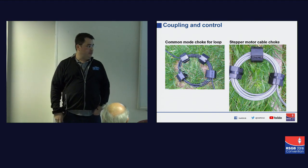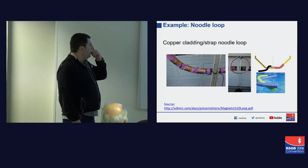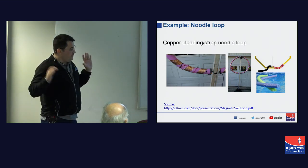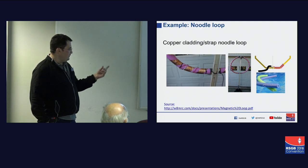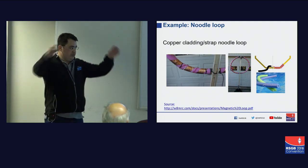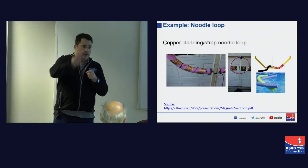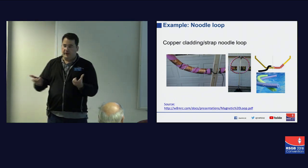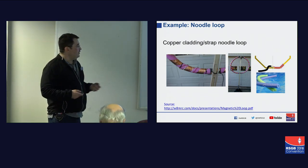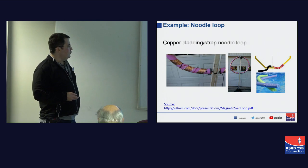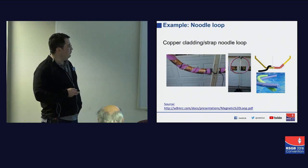In terms of examples beyond what I've done — there are guys out there who've created what they've called noodle loops, using the swimming noodles that kids learn to swim with as a former. They take some copper cladding, wrap it around, and create a loop out of that. It's an inexpensive way of getting a loop together, then using a twisted gamma match or a coupling loop. It's more difficult to use a toroid coil for that.